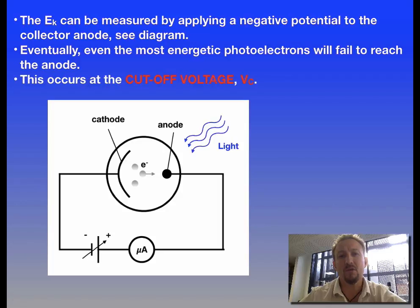This point is called the cutoff voltage. Basically we can work out our kinetic energy using a formula. The formula here is the maximum kinetic energy equals the charge of the electron times the cutoff voltage: E_kmax = qV_c.